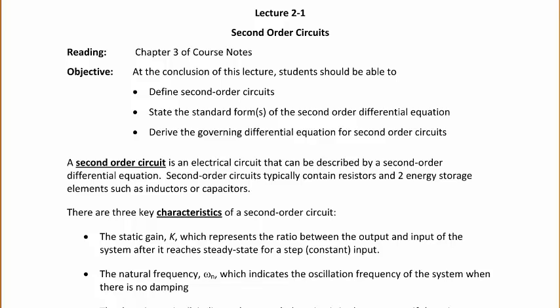A second-order circuit is an electrical circuit that can be described by a second-order differential equation. Second-order circuits typically contain resistors and two energy storage elements such as inductors or capacitors. Some of the common definitions used for those are RLC circuits, or RC-squared, or RL-squared circuits.